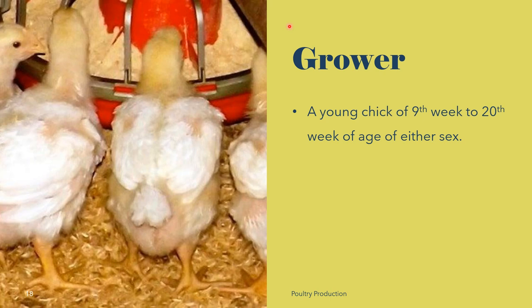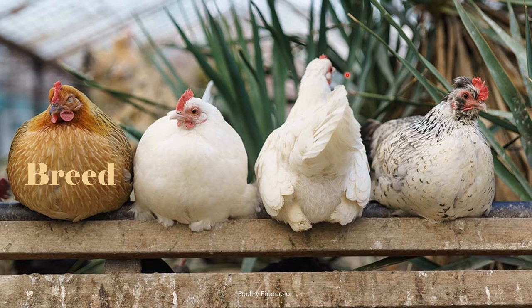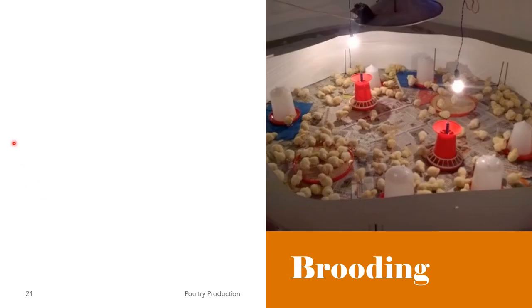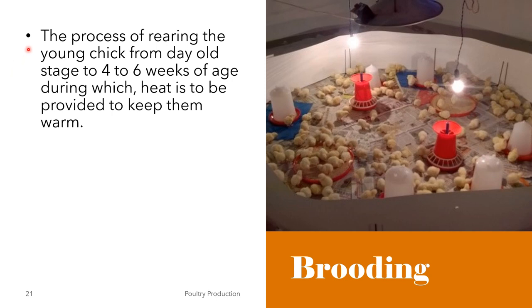The growing period usually lasts between 9 and 18 weeks of age. The breed is a group of birds within a species having similar characteristics and can produce offspring with similar characteristics. A group of chicks of the same age raised in one batch is called a brood. Brooding is defined as the process of rearing the young chick from day-old stage to 4 to 6 weeks of age, during which heat is to be provided to keep them warm. Brooding is a period immediately after the hatch when special care and attention is given to chicks to support their health and survival.